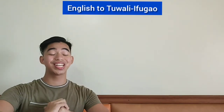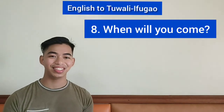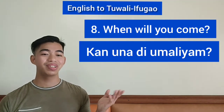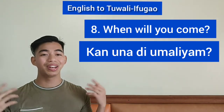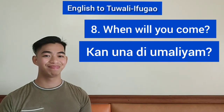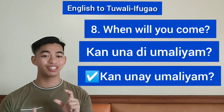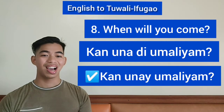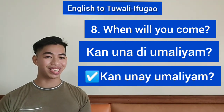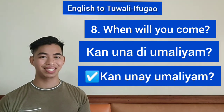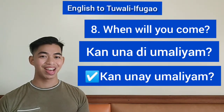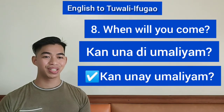Question number eight: When will you come? In Ifugao: 'and unay di dumatongam'. In speaking, contract to 'an unay umaliyam'. Repeat after me: An unay umariyang. It means 'when will we come'.